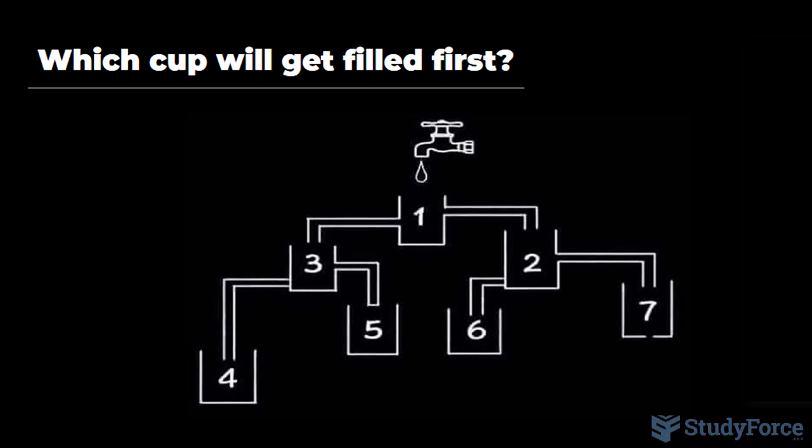The first being that the flow rate of the water coming out of the tap is consistent throughout the experiment. Our second assumption is that the flow rate of the water leaving the cups through these tubes equals the flow rate flowing into the system.